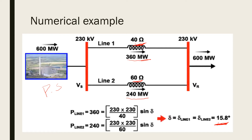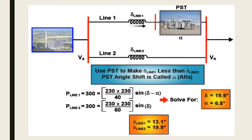That line is heavily loaded and the other is lightly loaded, but this should be solved. By connecting the PST — phase shifting transformer — in the line where the reactance is less, and adjusting the alpha angle, we can make the power angle delta in line 1 lesser than delta in line 2. This gives a common delta of 19.9 degrees and alpha equal to 6.8 degrees. The delta in line 1 becomes 13.1 degrees and in line 2 is 19.9 degrees. This solves our problem. Now we verify the result using the PowerWorld simulator.